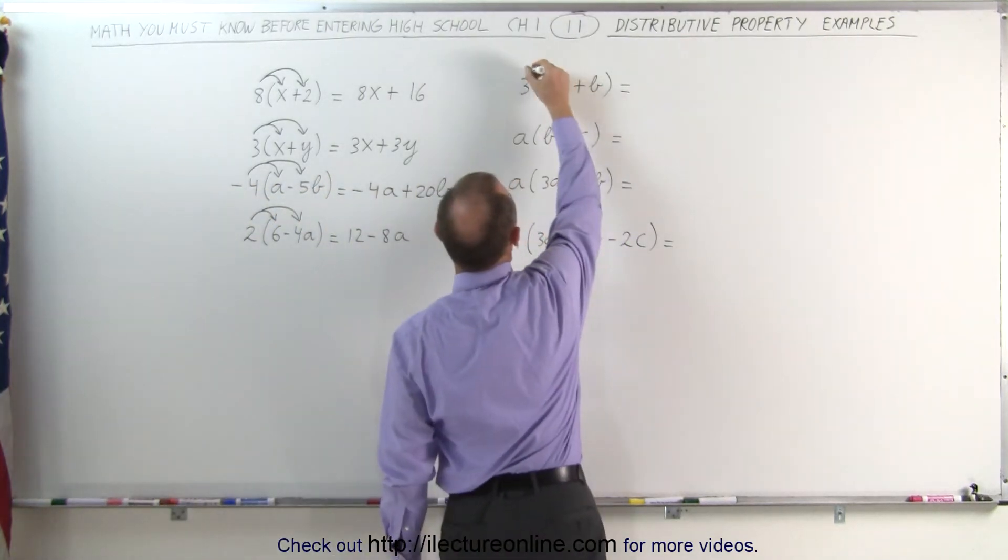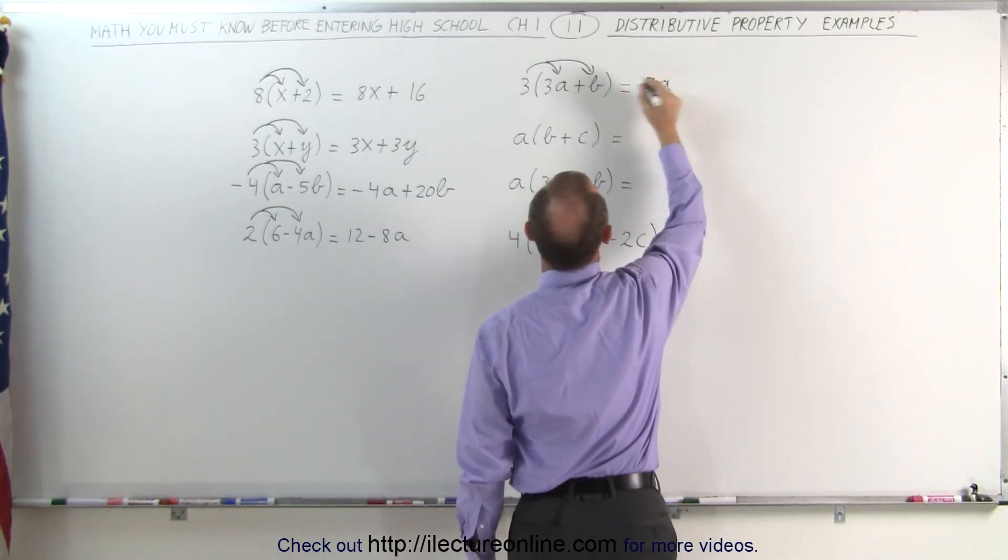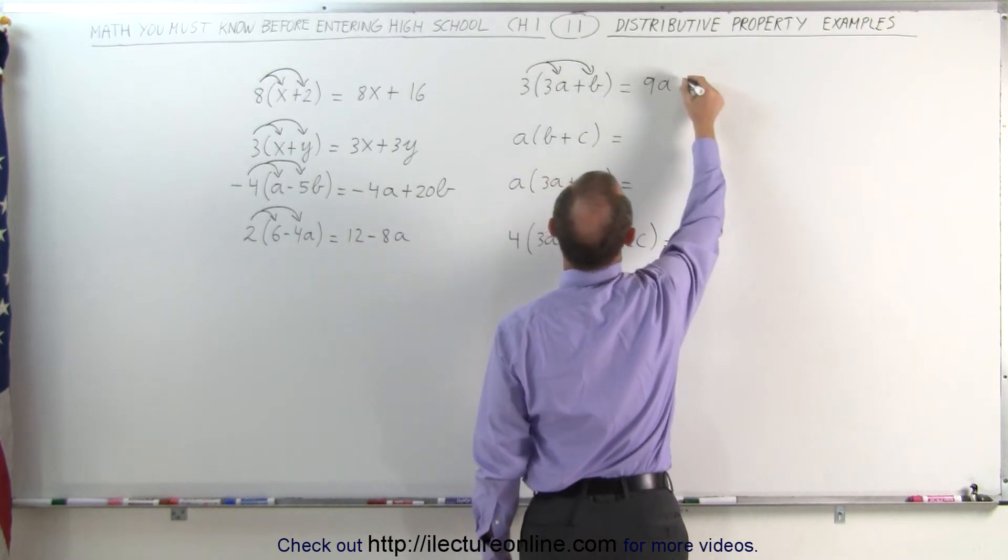Here we're going to distribute the 3 over the 3a and the b. 3 times 3a gives me 9a, and 3 times b gives me 3b, and they're both positive.